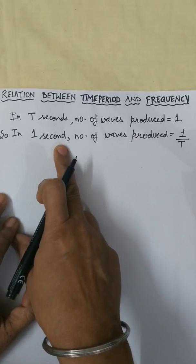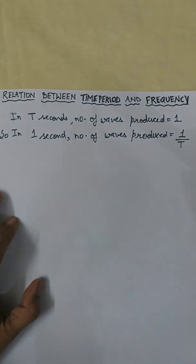So in one second, how many waves will be produced? That will be 1 upon T.